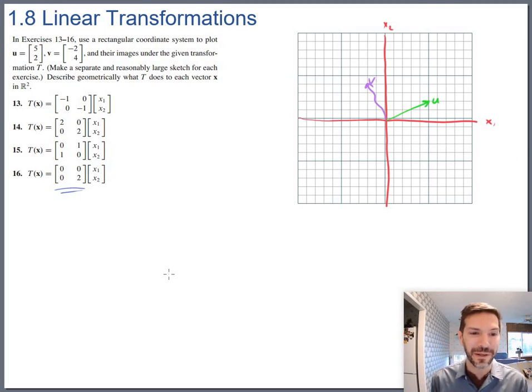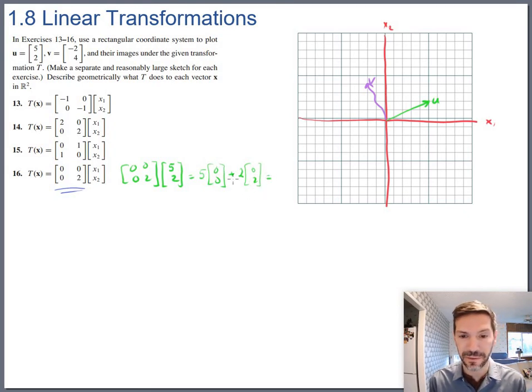We also need their images under the given transformation. So for 16, the transformation is this 0, 0, 0, 2 matrix. So let's do u first. So 0, 0, 0, 2 times 5, 2. And keep in mind that means 5 of the first column plus 2 of the second column. So 5 of the first column is still 0, 0. And that becomes 0, 4. Adding those together becomes 0, 4. So that was mapping u.